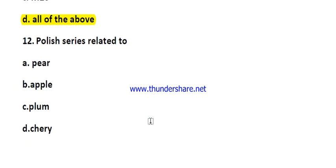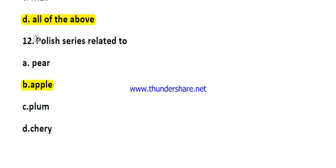Question number twelve: the P series rootstock is related to which crop? Options are apple, plum, and cherry. This is a very important question — the P series is a rootstock of apple, and this P series is related to Poland, meaning it was released from Poland.